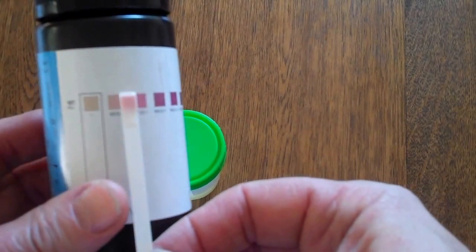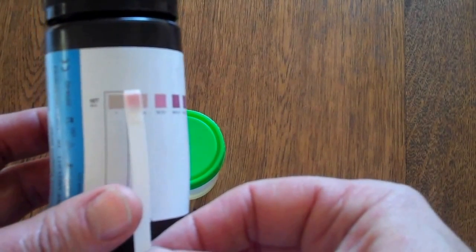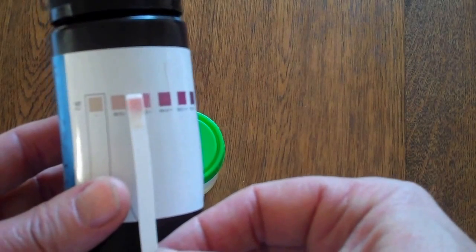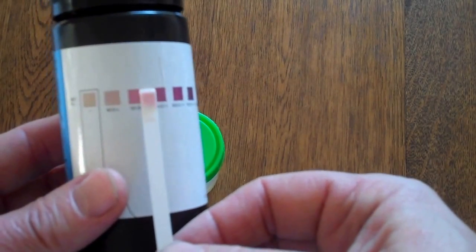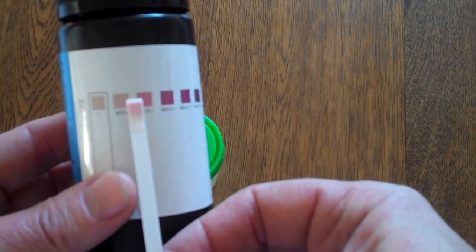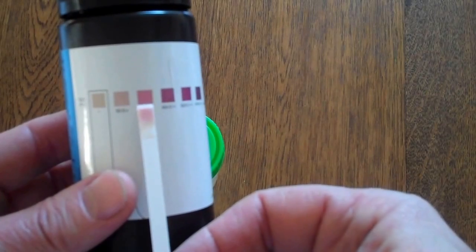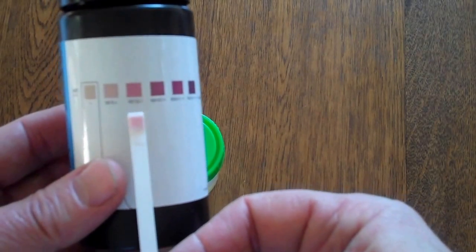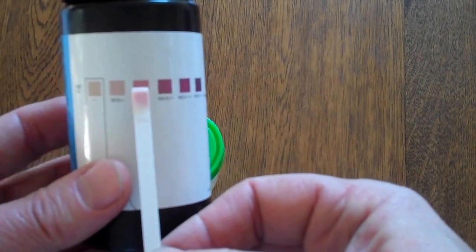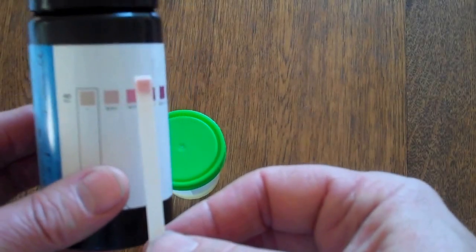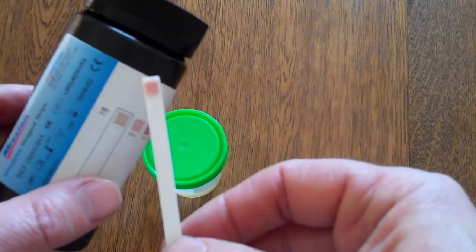So if we now have a look at this pad you can see that it's changed from being completely negative to being approximately the same shade as this color bar here. So that indicates the presence of ketones in this sample at or around that level. So this is a positive test determining the presence of ketones in the urine sample.